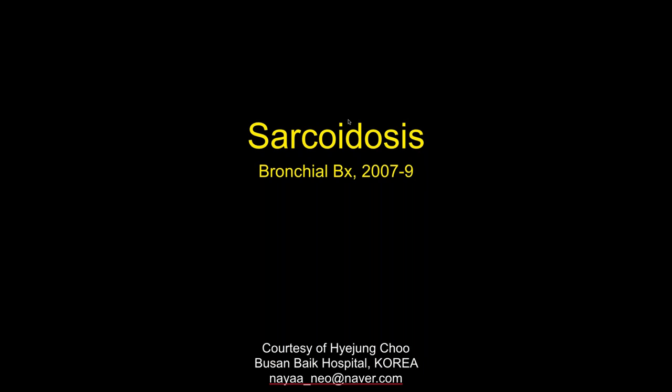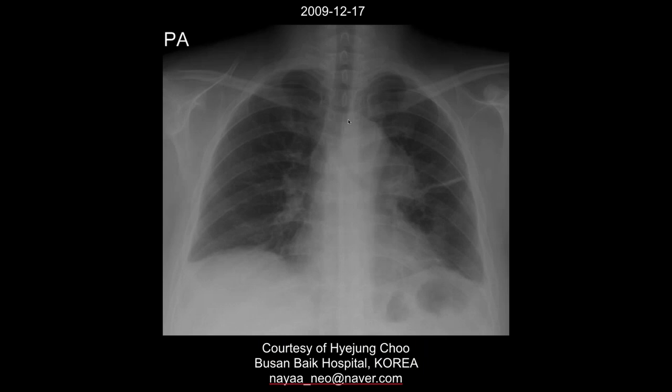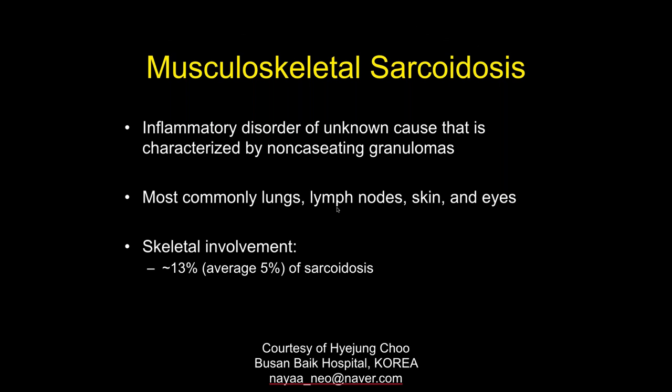Here's the chest X-ray showing lymphadenopathy — big nodes. Skeletal involvement in sarcoidosis is relatively uncommon but common enough to be concerned about.